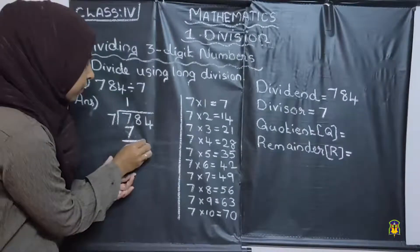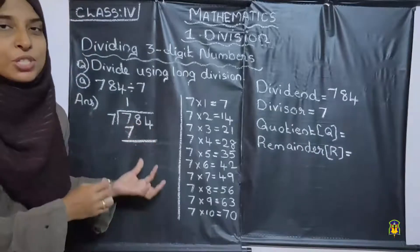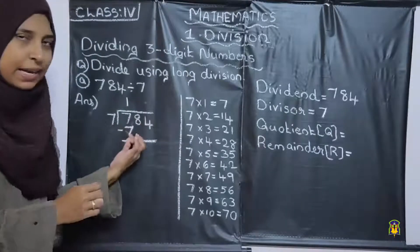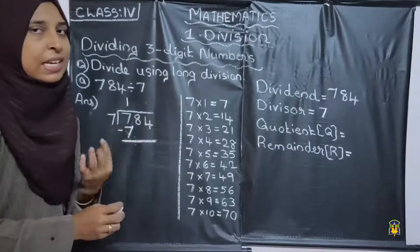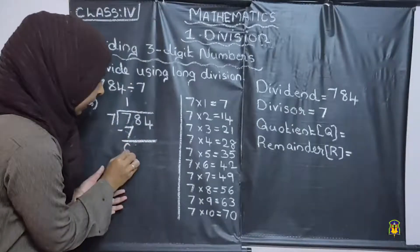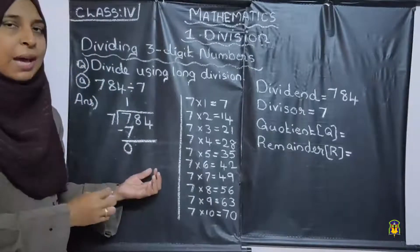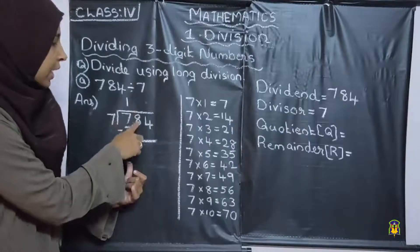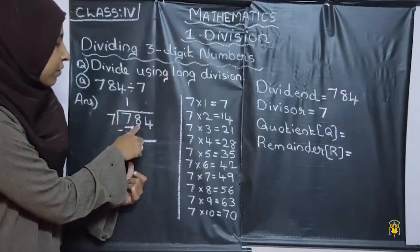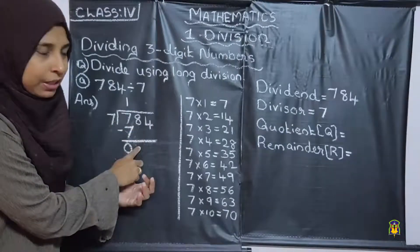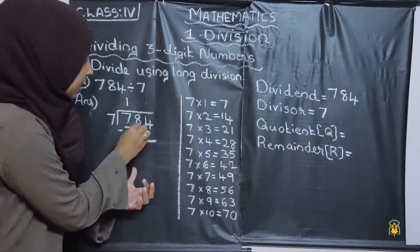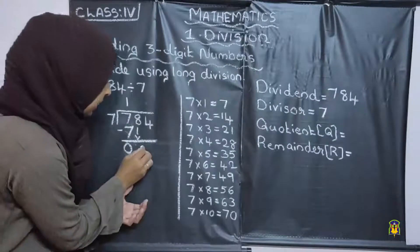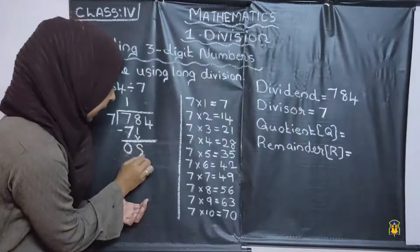Next, what we want to do is subtract. We want to subtract. 7 minus 7 is 0. Then, next step — here we get 0. Next step, we want to bring down the second digit. We want to bring down the second digit, that is 8.